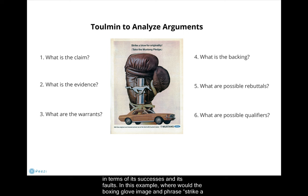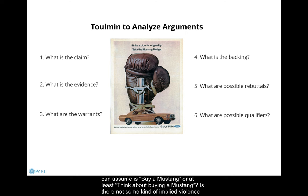In this example, where would the boxing glove image and phrase "strike a blow" fall into the Tullman scheme? If it is evidence, what warrant connects it to the primary claim of the ad, which we can assume is "buy a Mustang," or at least "think about buying a Mustang"? Is there not some kind of implied violence in the use of the boxing glove image?